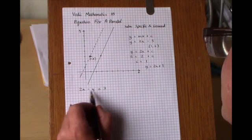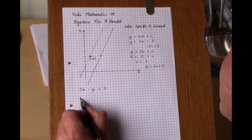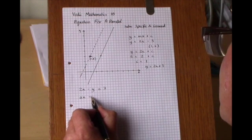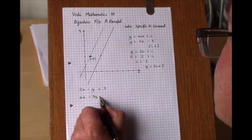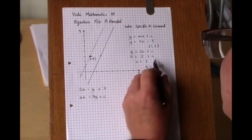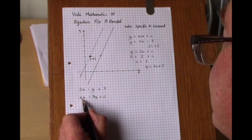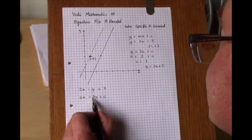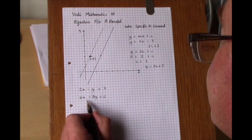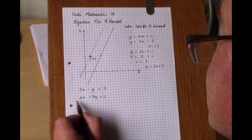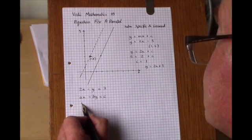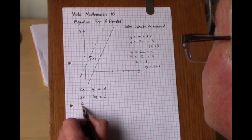In this equation, the general form of which is ax minus by equals c (that c is not the same as that one), these two coefficients of x and y, a and b, give you the... well, their ratio gives you the gradient of the line: a over b.